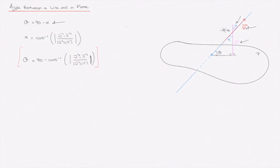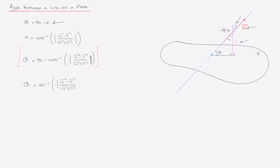Since alpha and theta are complementary angles, we can simplify this formula one step further. We can say that theta equals arc sin of the absolute value of u dot n, over the product of the magnitudes of u and n. That is the formula to find the angle between a line and a plane. Now let's go ahead and see how we use this formula with an example.